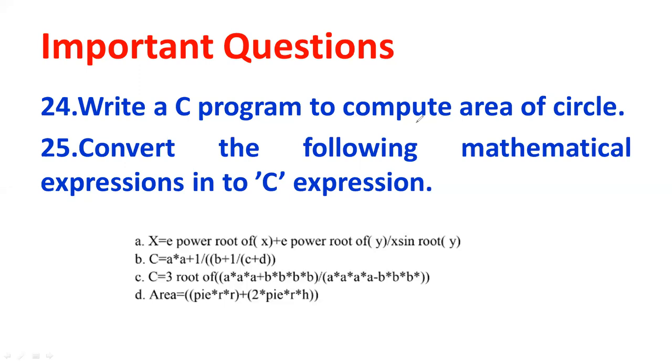24th question. Write a C program to compute area of a circle. Area means pi r square. How to make out? Then convert the following expression into mathematical expression into C expression. There is a mathematical expression. You have to convert the following mathematical expression into C expression. How to make out? These are the mathematical expression. How to convert into C expression.